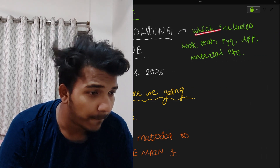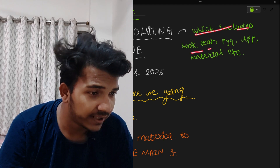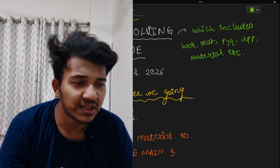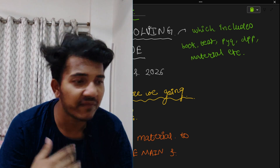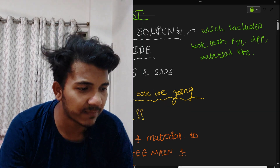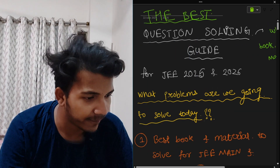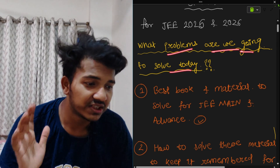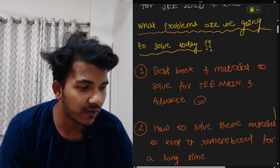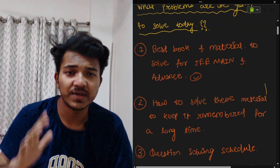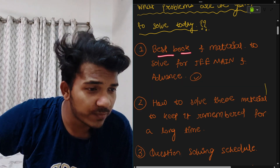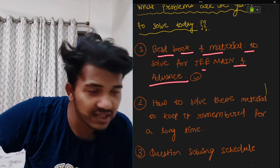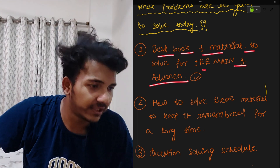So what does question solving include? It includes books, tests, PYQs, DPPs, material, etc. What are we going to discuss today? First: best books and materials to solve for JEE Main and Advanced. We will see this as the first topic.